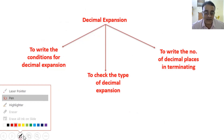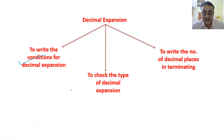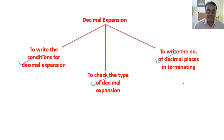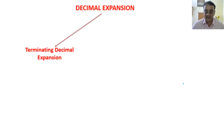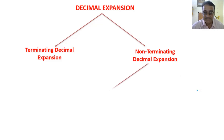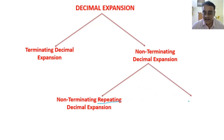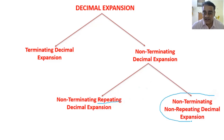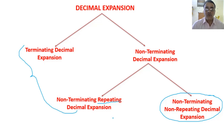In decimal expansions, I had told you there are 3 types of questions: first is to write the condition for decimal expansion; second, to check the type of decimal expansion; and third, to write the number of decimal places in terminating decimal expansion. Let us revise: first, terminating decimal expansion; second, non-terminating decimal expansion — and non-terminating again has two types: one is repeating and the second is non-repeating. Non-repeating is an irrational number, while terminating and non-terminating repeating are rational numbers. So rational number we can define as a number having decimal expansion either terminating or non-terminating repeating.